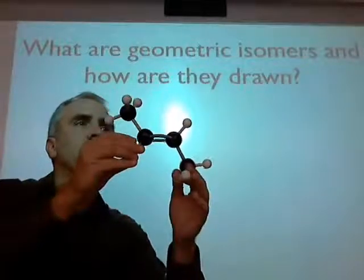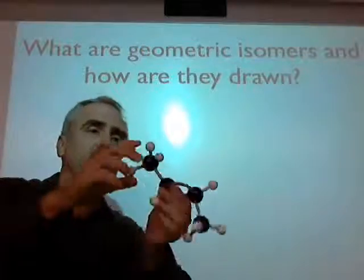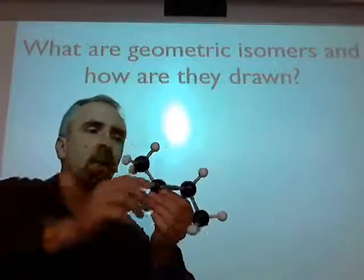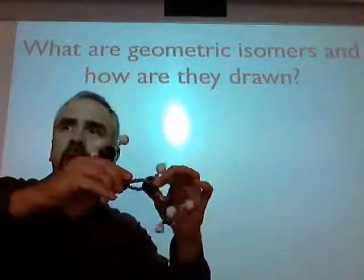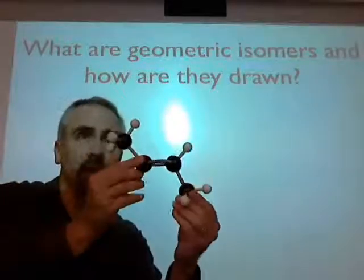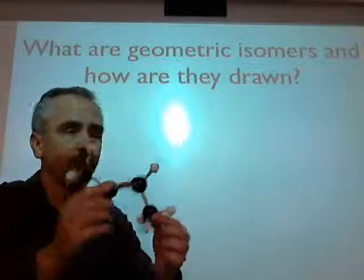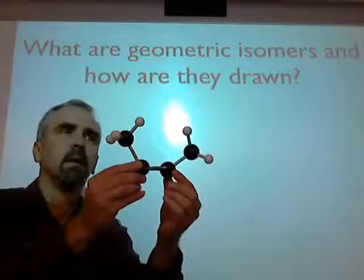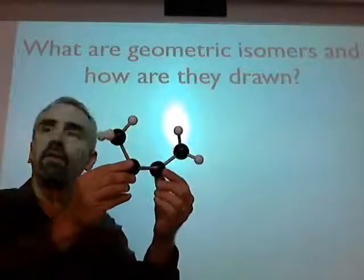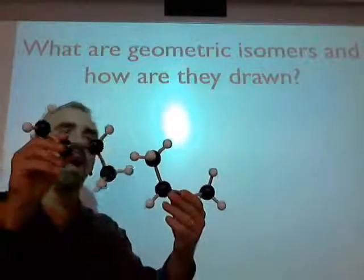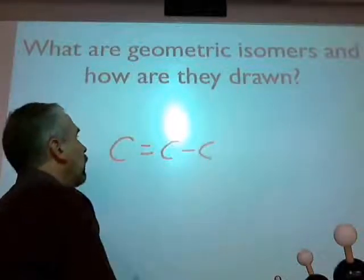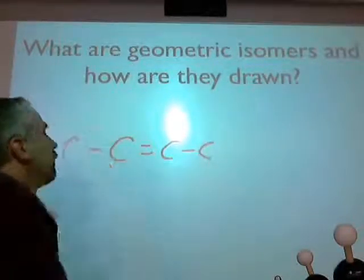Now, the thing is, double bond doesn't allow free rotation like this guy does. I could rotate into staggered and eclipsed, whatever, but I can't rotate this guy. So it turns out that this guy is slightly different than this guy. You see the difference?